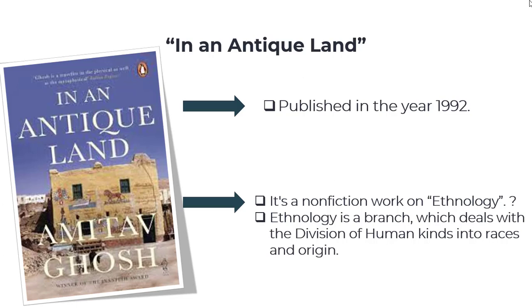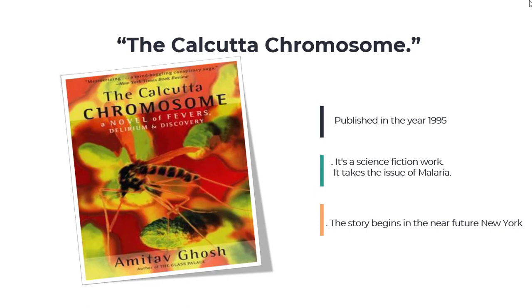Another important work of Amitav Ghosh is The Calcutta Chromosome, published in 1995. It is a science fiction work that deals with the issue of malaria. The story begins in the near future New York, where the future is described as corporate-dominated and extremely scientific, where people don't have emotion in them — yet even so, it is not entirely devoid of hope and enjoyment.